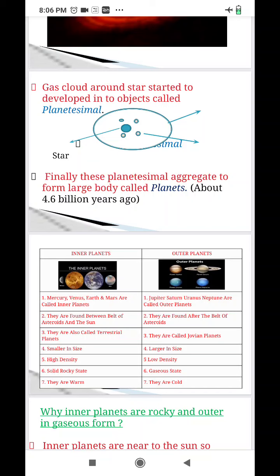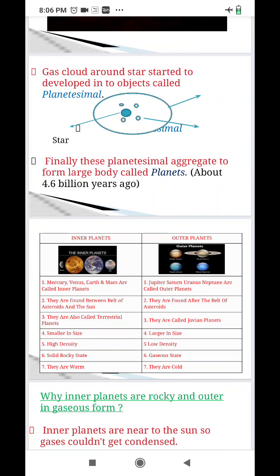Now, what happened over the time, the outer planets are also known as Jovian planets. Jovian means Jupiter-like because all of them are formed in gaseous state. The inner planets are smaller in size and their gravity could not hold the gases like hydrogen and other dust particles, which were blown away by the solar winds to the outer planets. Outer planets are larger in size but inner planets are having higher density and outer planets are having lower density.